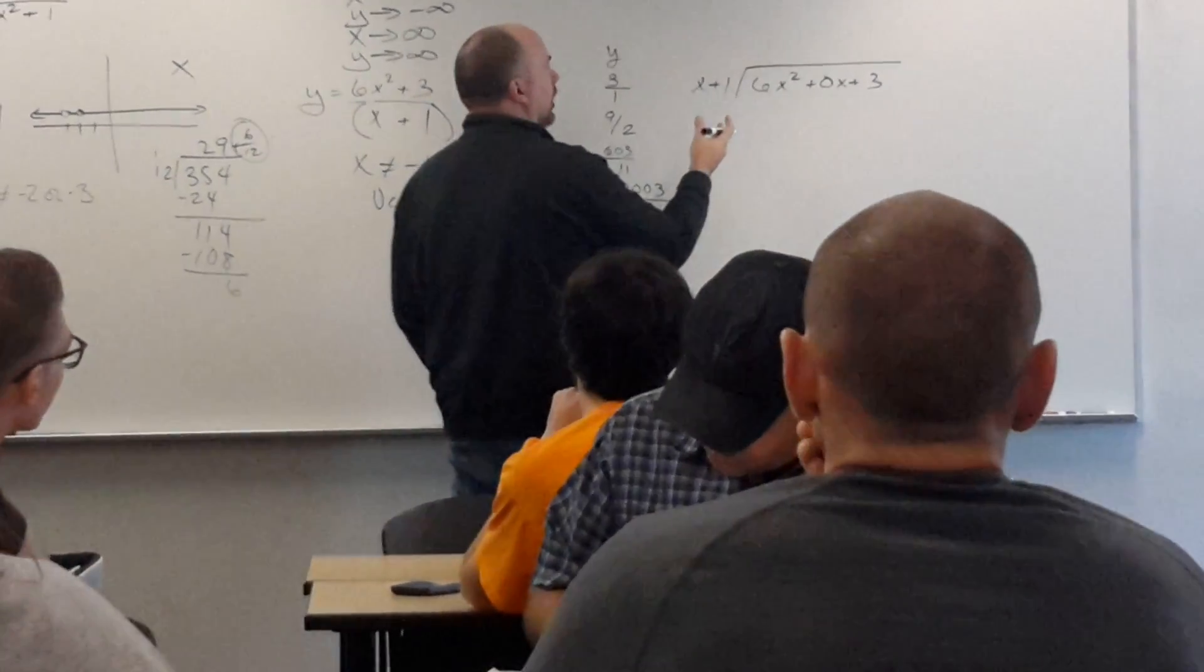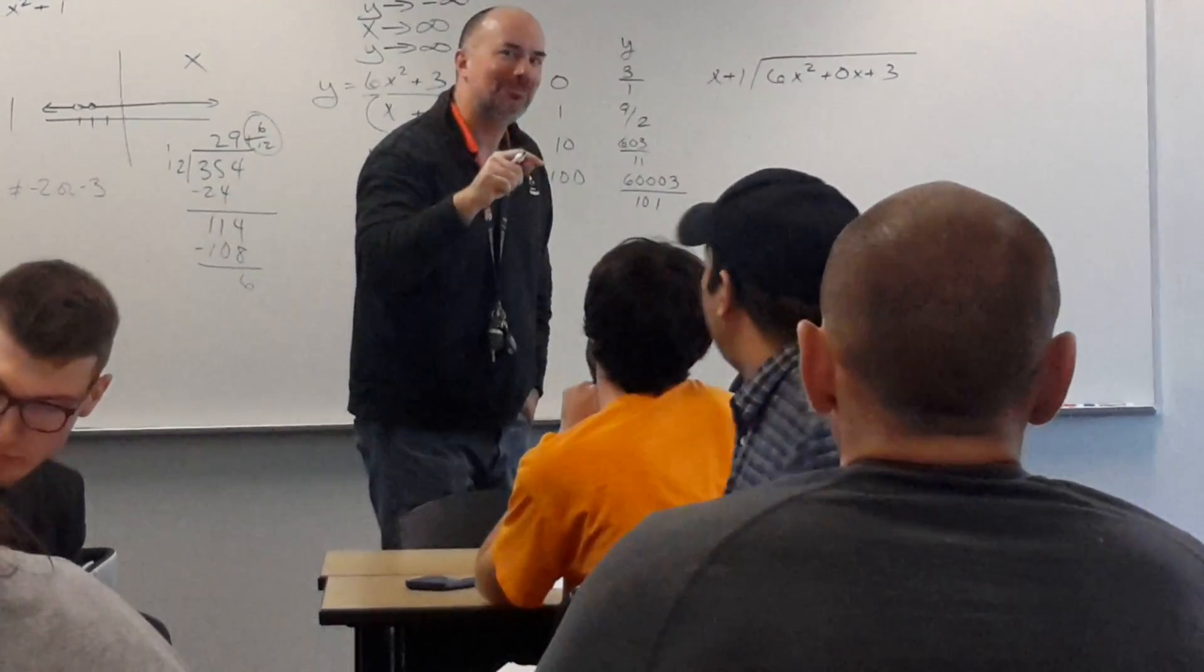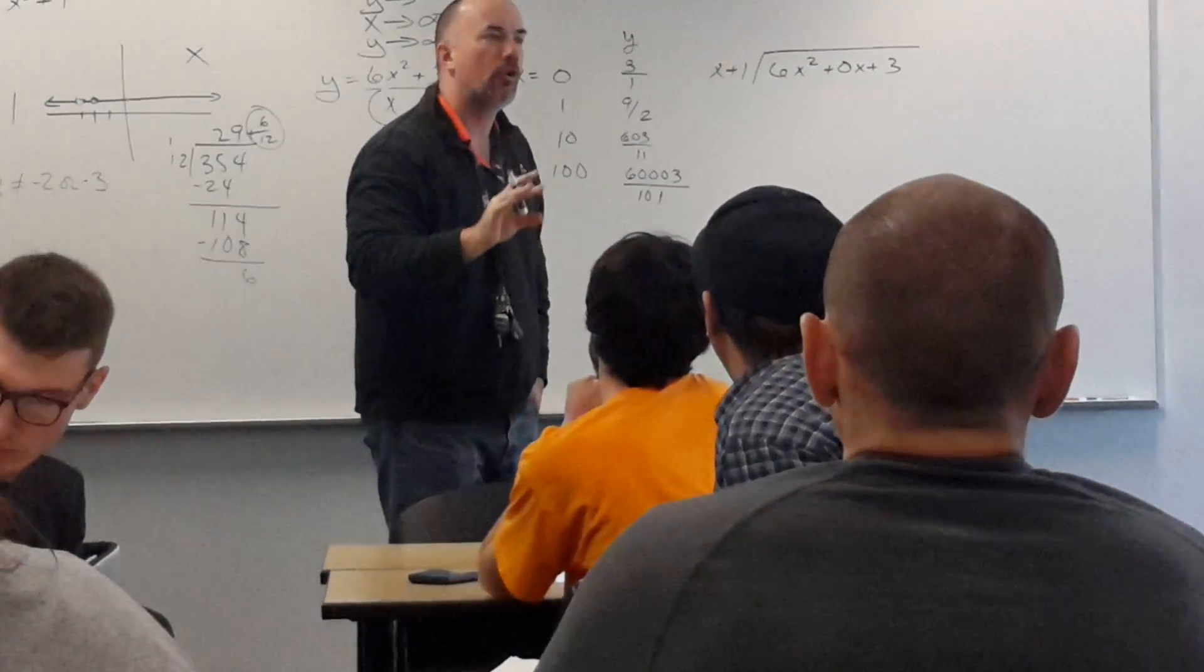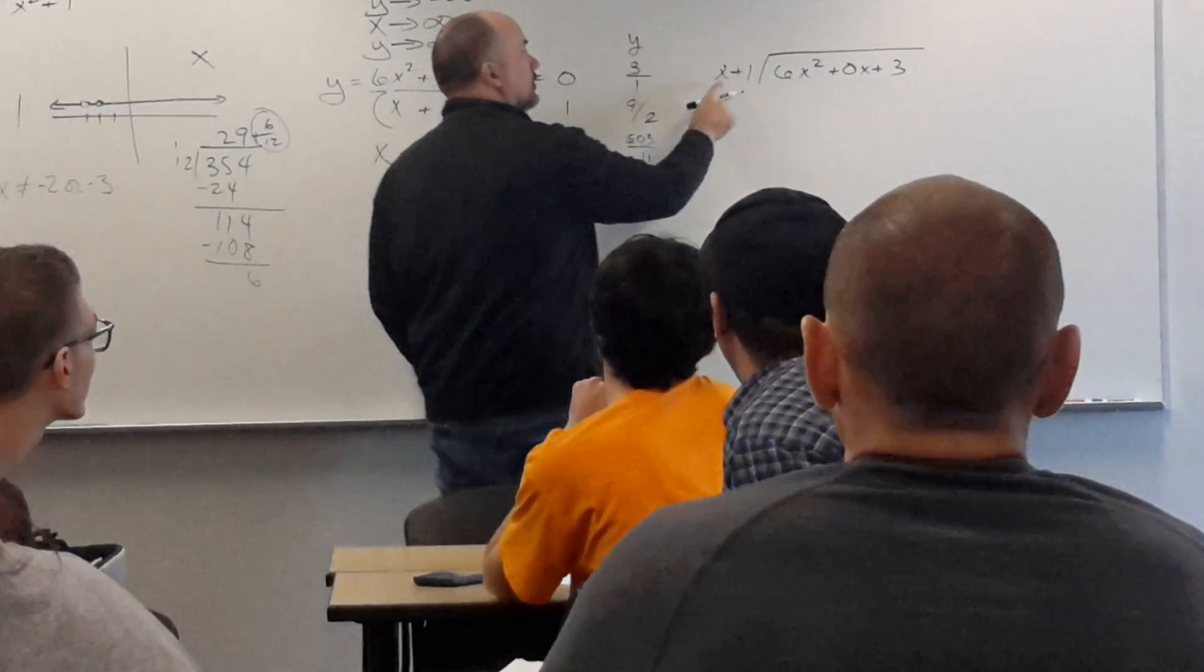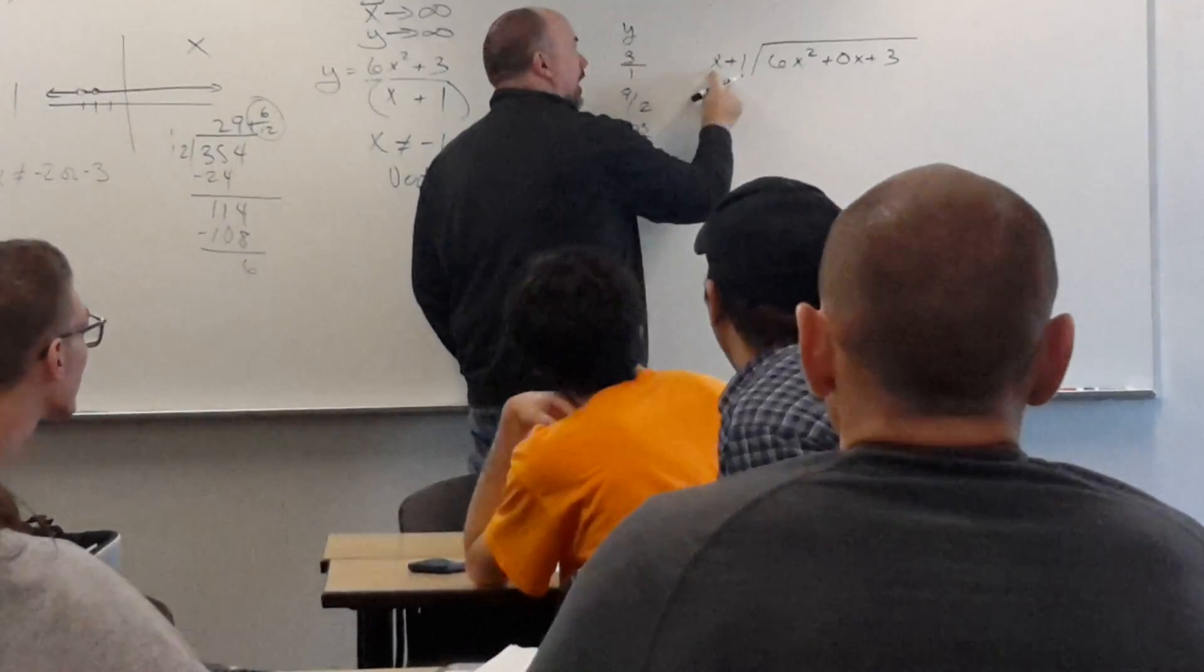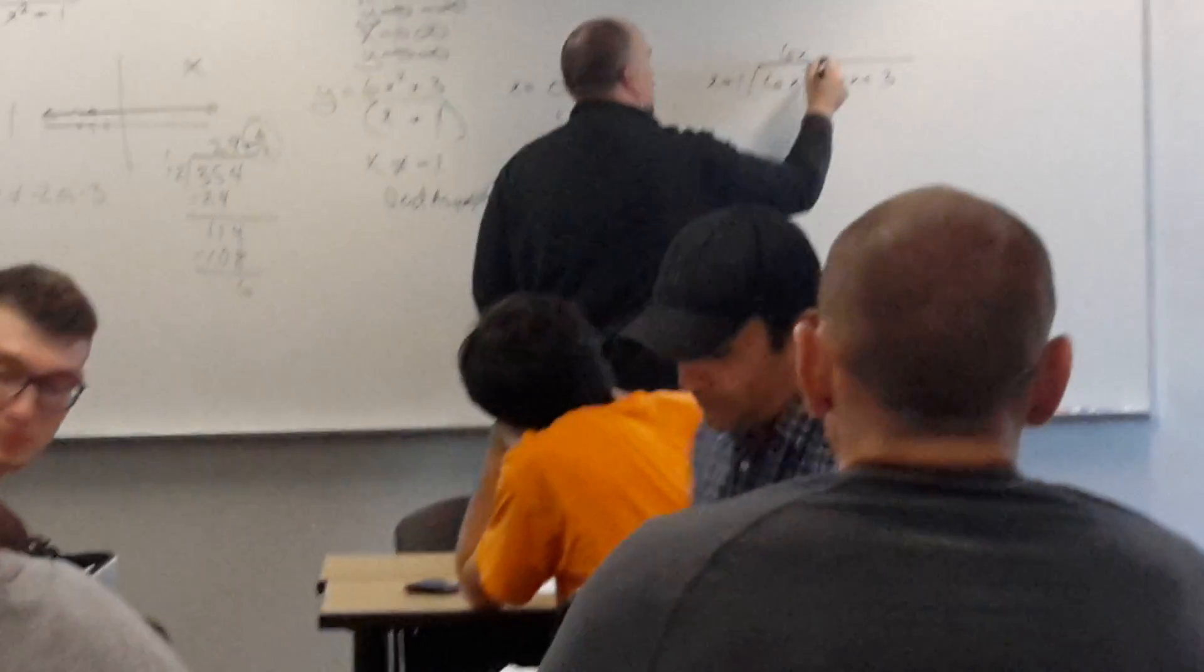So, what do I do? You ask yourself, what do I multiply x by to turn it into 6x squared? Ignore the 1. Just look at the x. What do I multiply x by to turn it into 6x squared? 6x.